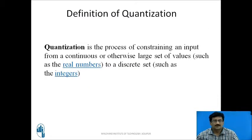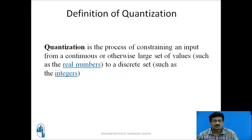First, we will discuss the basic definition of quantization. Quantization is the process of constraining an input from a continuous or otherwise large set of values, such as the real numbers, to a discrete set such as the integers. Real sampling values are converted into complete integer values. For example, actual real-time voltages like 2.1 volts or 3.2 volts are converted to discrete quantized values such as 2 volts or 3 volts — known standard levels.